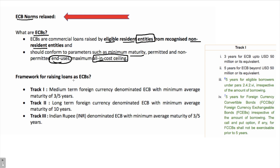There are three tracks for raising loans as external commercial borrowings — Track 1, Track 2, and Track 3 — and these are very important. I am expecting a question from this area in the upcoming examination. Track 1 is when you are borrowing for a medium term; it is a foreign currency denominated external commercial borrowing, and the minimum average maturity is 3 to 5 years.